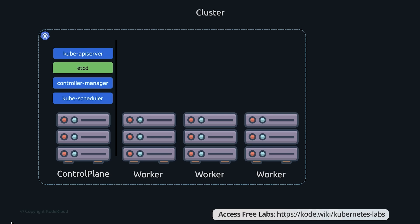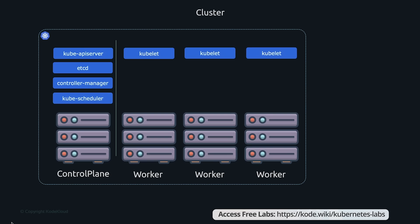The controllers are the brain behind orchestration — they're responsible for noticing and responding when nodes, containers, or endpoints go down, and make decisions to bring up new containers in such cases. The scheduler is responsible for distributing work or containers across multiple nodes; it looks for newly created containers and assigns them to nodes. On the worker nodes, you have the kubelet, which is the agent that runs on each node, responsible for making sure containers are running as expected. You also have kube-proxy, which maintains network rules on the nodes and helps worker nodes and containers communicate with each other.